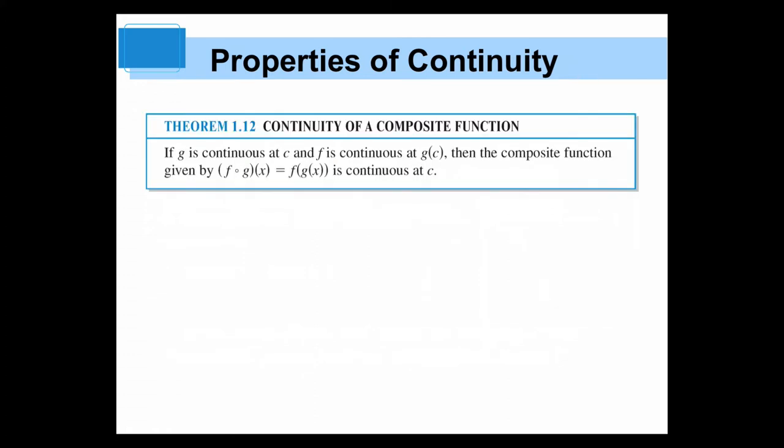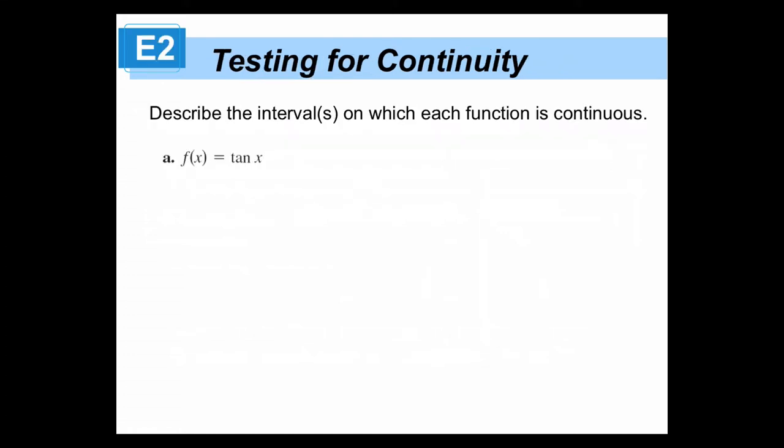Composite functions, it's the same thing. If you add, subtract, multiply, and divide, you get another continuous. If you put a continuous function into another continuous function, it stays continuous. You all know that the tangent is discontinuous because it has asymptotes, right?